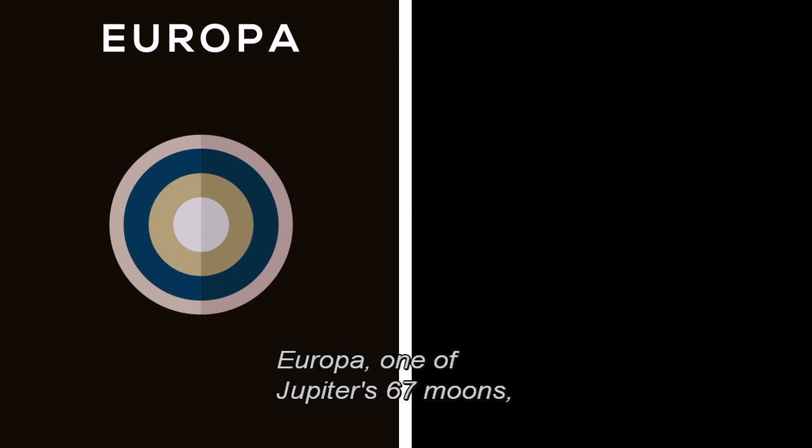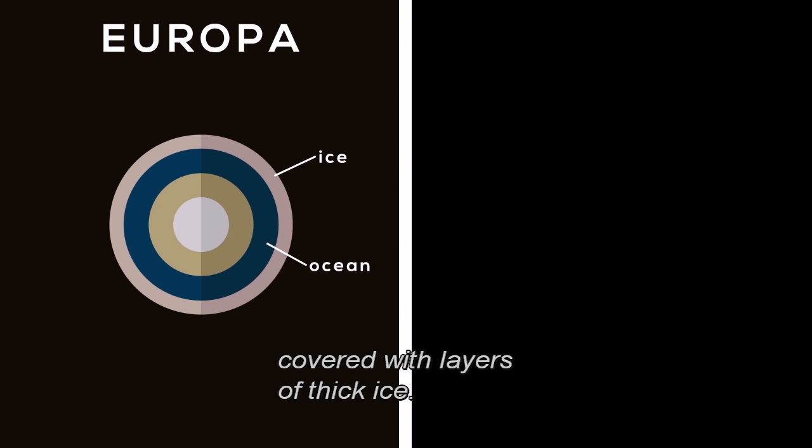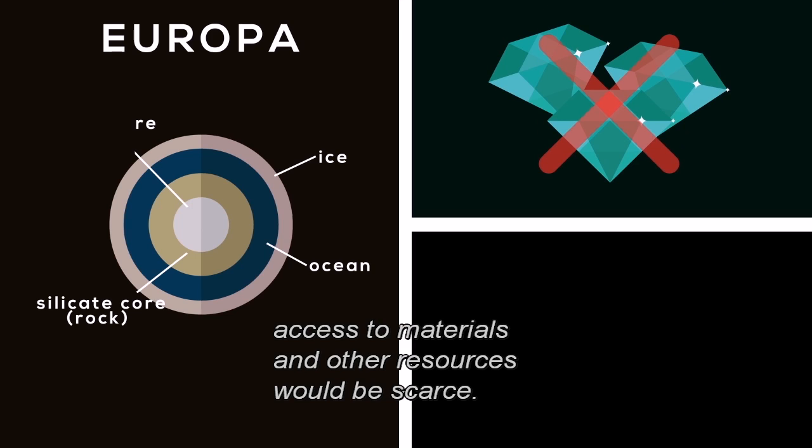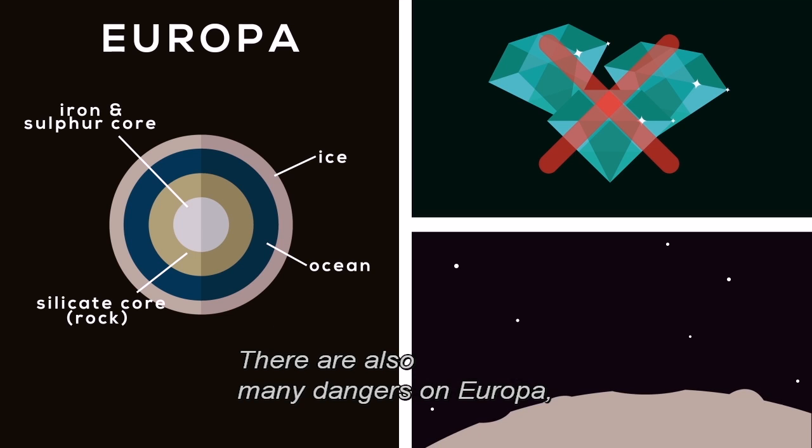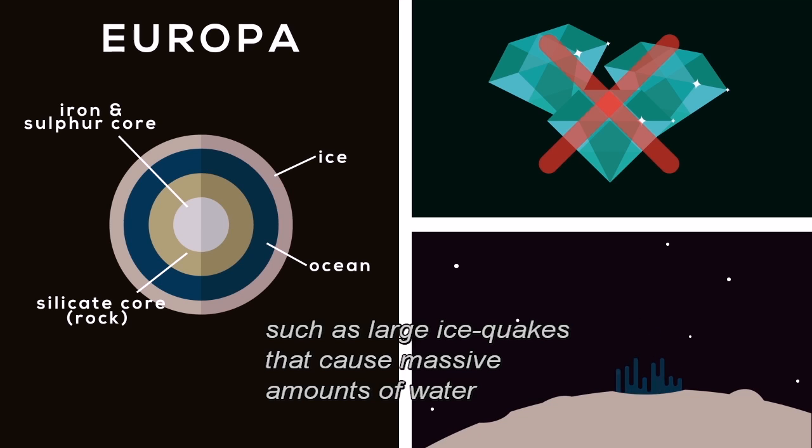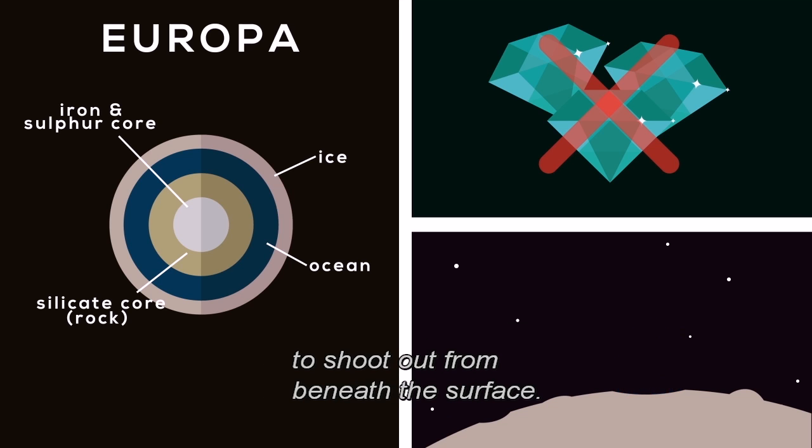Europa, one of Jupiter's 67 moons, is believed to have an underground ocean covered with layers of thick ice. If there is only water underneath, access to materials and other resources would be scarce. There are also many dangers on Europa, such as large ice quakes that cause massive amounts of water to shoot out from beneath the surface.